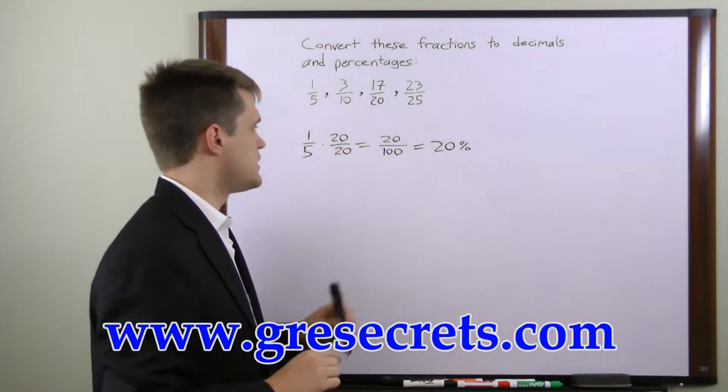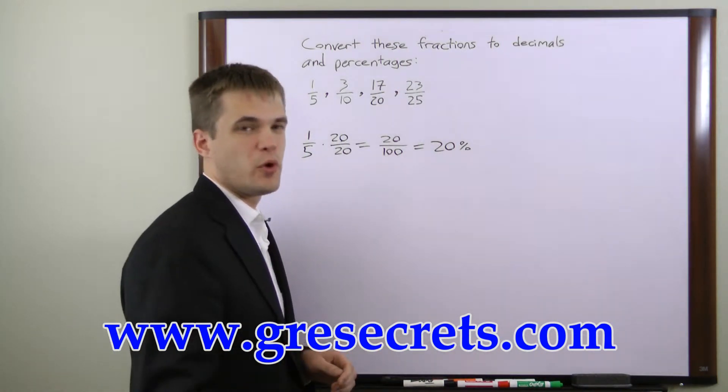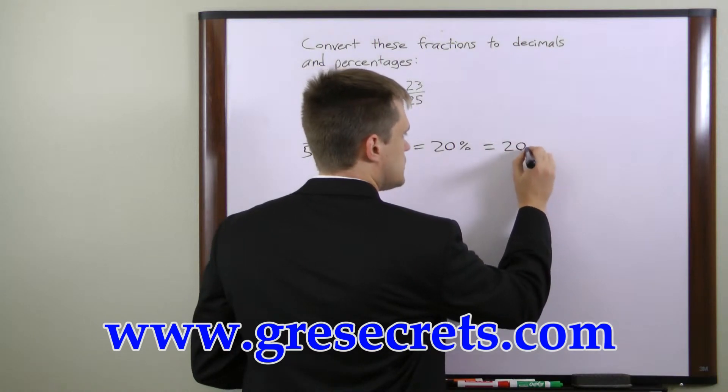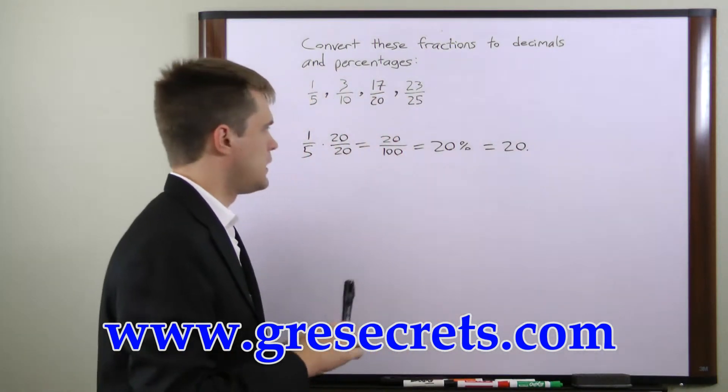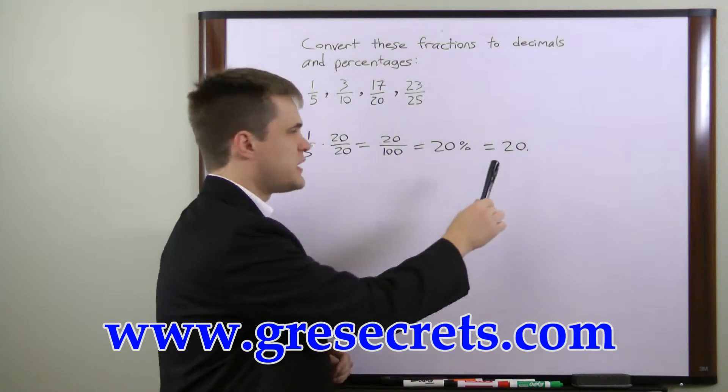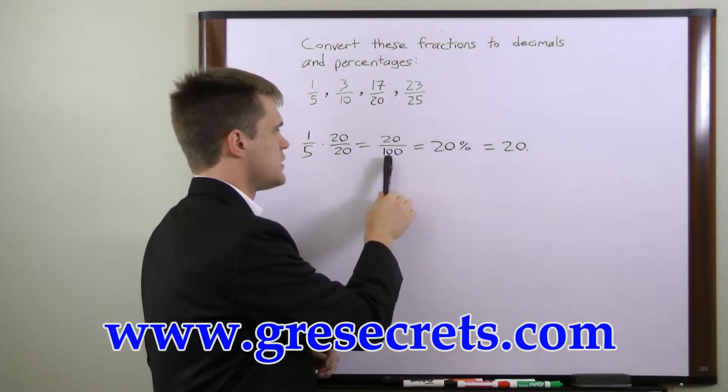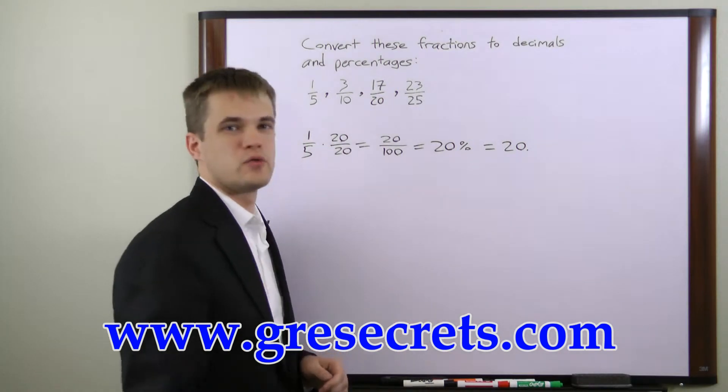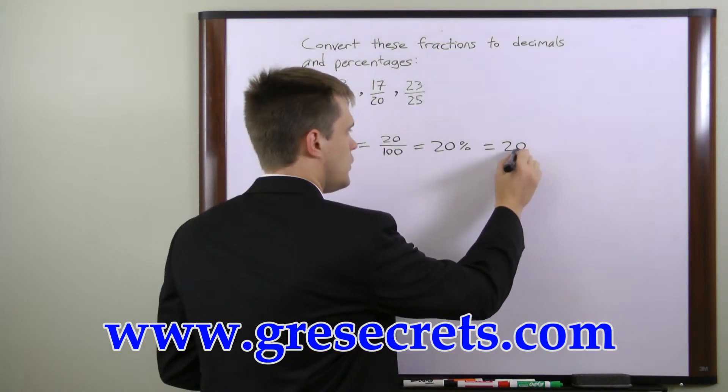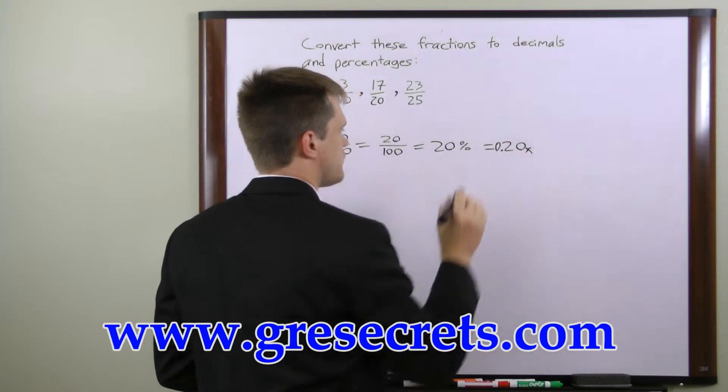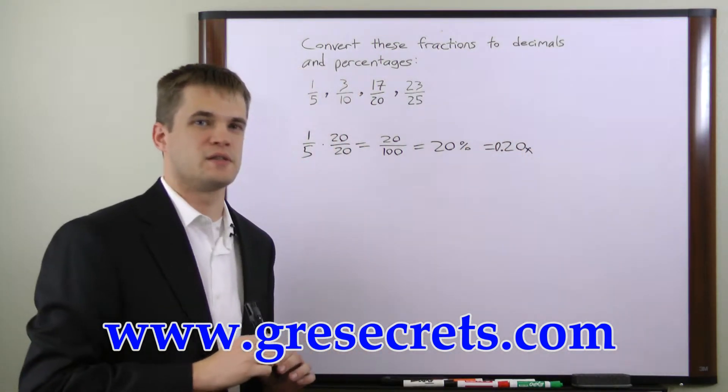To write it as a decimal, you write the numerator with a decimal point following it. 20 point. And you move the decimal point two places to the left because your denominator is 100. So 1, 2, there's where your decimal point will be. And we'll put a 0 in front of it so that we can recognize it as a decimal.